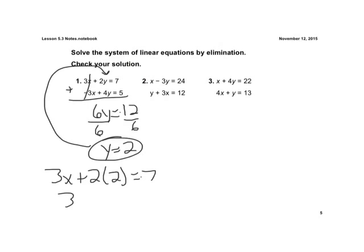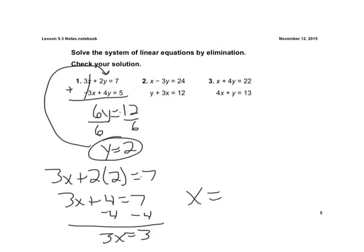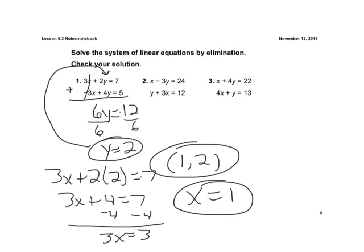Do the math here. 3x plus 4 now equals 7. Subtract 4. 3x equals 3. If we divide by 3, we're going to get x is equal to 1. And there's our solution: (1, 2). Using elimination.